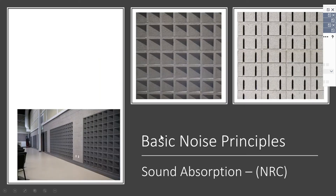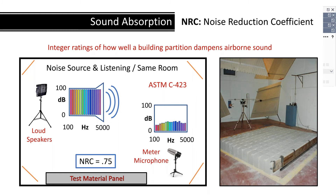The next section reviews basic noise principles, starting with sound absorption. How well various materials absorb sound is measured according to ASTM C423 standards. A testing chamber is constructed with highly reflective concrete walls, then a test material is assembled within the room. A full spectrum of noise with known sound pressure levels is generated within the chamber.